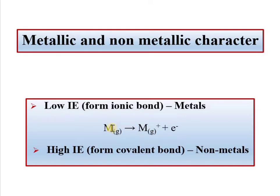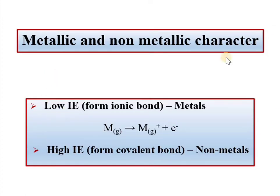जिनकी ionization energy अधिक होती है, उनकी electronegativity बहुत कम नहीं होती, तो वे metal नहीं हो सकते — वो non-metal होंगे। इसीलिए periodic table में left side के elements metals हैं और right side के elements non-metals हैं, क्योंकि right side में ionization energy बहुत अधिक है और left side में बहुत कम है।